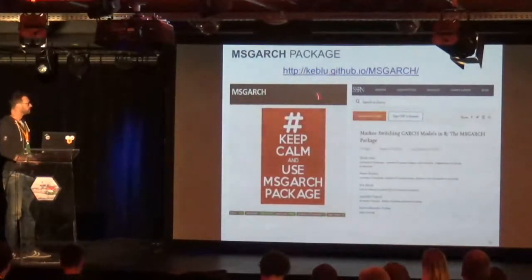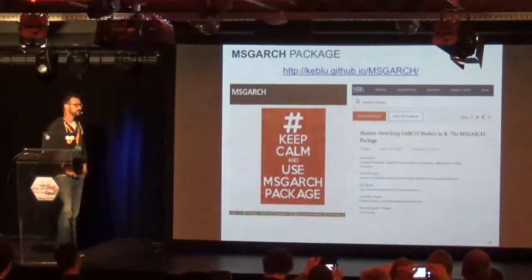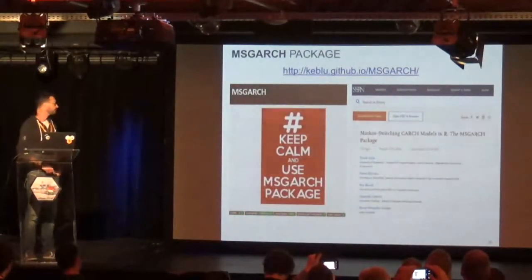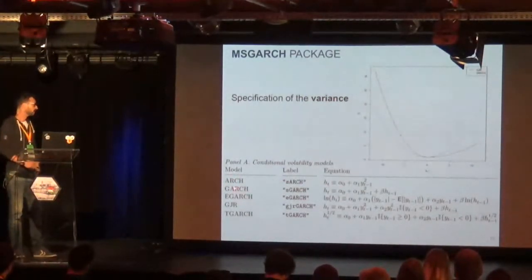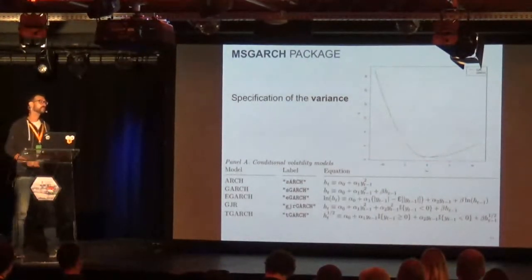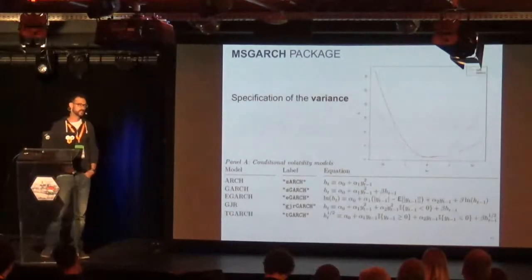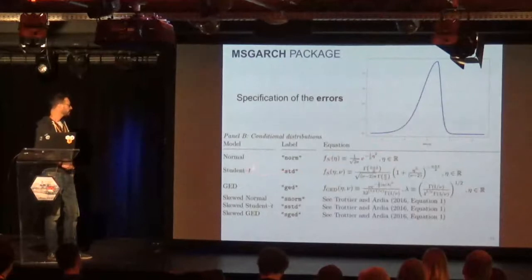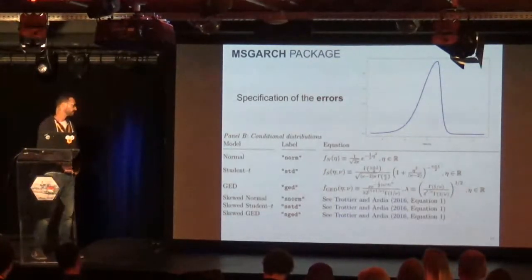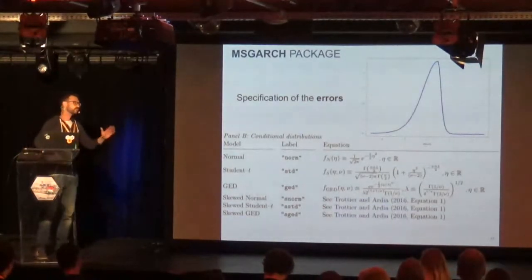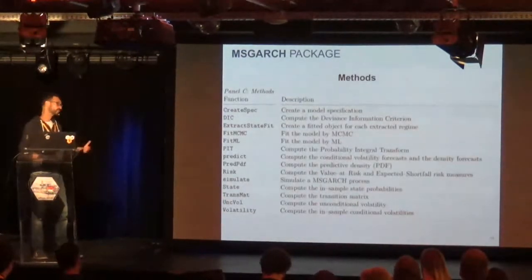We have a web page with lots of examples, and a vignette available on SSRN describing everything in detail. We provide specifications for the variance: the ARCH process, the symmetric GARCH, and a bunch of asymmetric models — because in finance a negative shock usually implies larger conditional variance. For errors, we support Normal, GED, and skewed versions. This gives very flexible specifications for single and multiple regime models, where each regime can have a different variance and error specification, or be constrained to be the same across regimes.